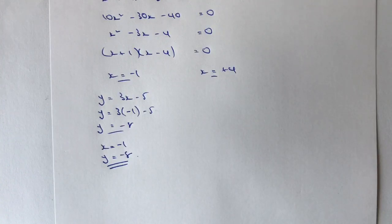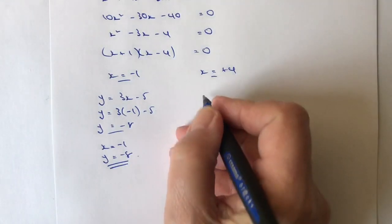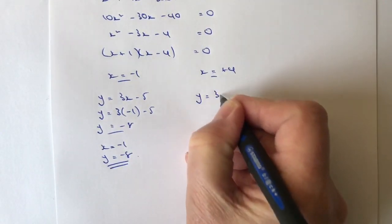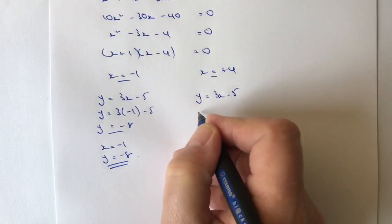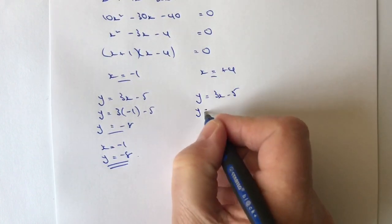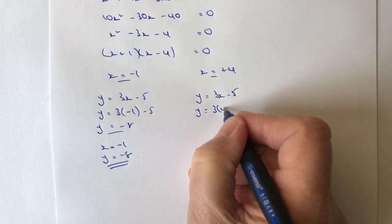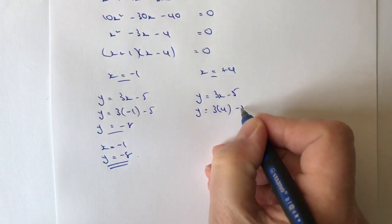So let's have a look at when x equals 4. So when x equals 4, I'm going to do exactly the same. y equals 3x minus 5. And rather than writing x, I'm going to write the plus 4 value minus 5.